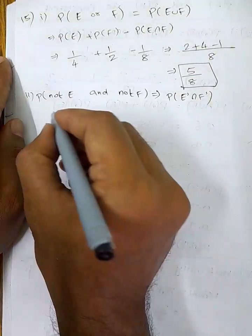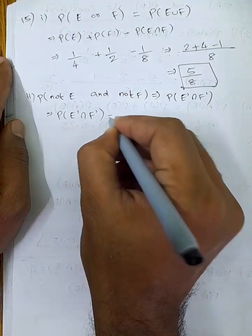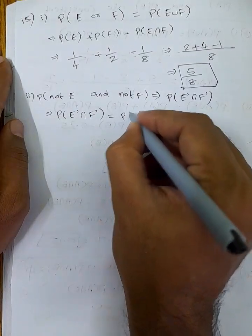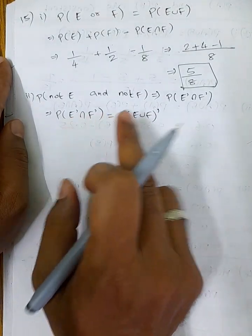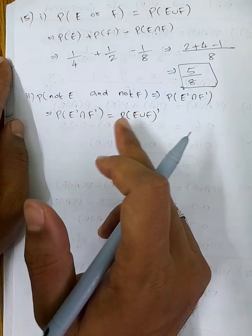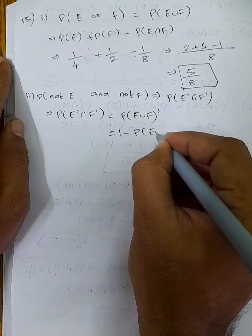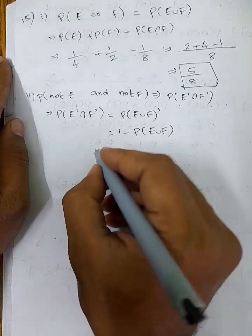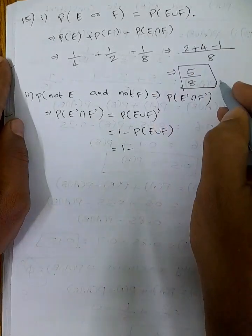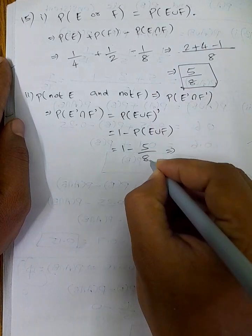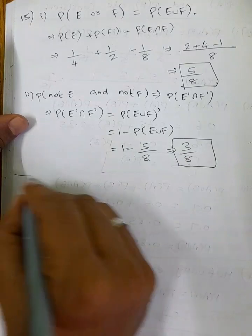Now P(E'∩F') — using De Morgan's law, E' intersection F' equals (E∪F)'. So P(E'∩F') is equal to P((E∪F)'), which equals 1 minus P(E∪F). P(E∪F) value is 5 by 8, so LC 8 minus 5 gives 3 by 8. So P(not E and not F) equals 3 by 8. That's it.